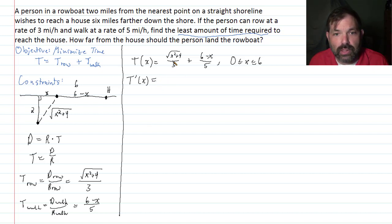So then t prime of x. This is the same as one-third. Now, that square root of x squared plus four, that's x squared plus four to the one-half power. So times one-half, times x squared plus four to the negative half. Then times from the chain rule, 2x. Plus six minus x over five. That's the same as one-fifth. And then the derivative of six minus x is just negative one. So if we clean this up a little bit, that would give me x over three root x squared plus four. And then minus one-fifth is t prime of x.